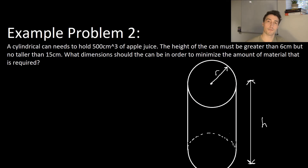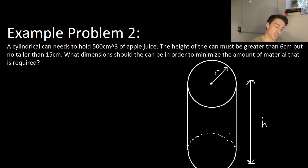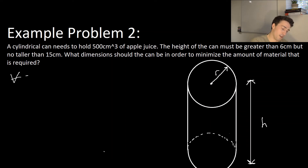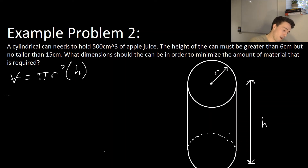Now we're moving on to example problem number two. It's a very similar problem to the first one, but we just have a different shape. It says: a cylindrical can needs to hold 500 centimeters cubed of apple juice. The height of the can must be greater than six centimeters but no taller than 15 centimeters. What dimensions should the can be in order to minimize the amount of materials needed? Again, we're going to start with our constraints. The volume of a cylinder is pi r squared times H, and we can say 500 equals pi r squared times H.